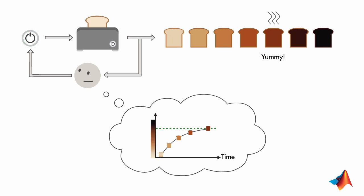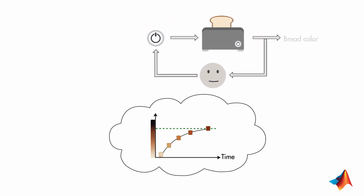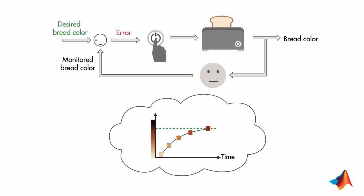If we now project what you think in your mind onto the closed loop structure here, we get the complete feedback loop. This part represents the comparison you make between what you see and what you want. You compute the difference between monitored and desired bread color, and this gives you the error. Then, based on the error, you decide whether to keep the toaster on or turn it off.